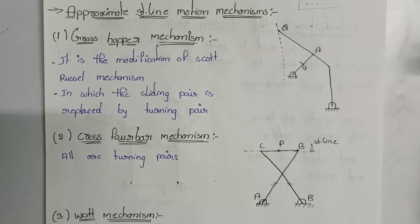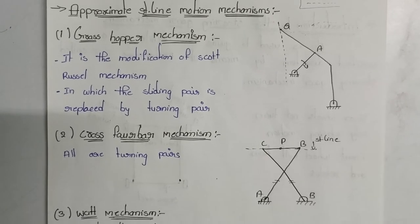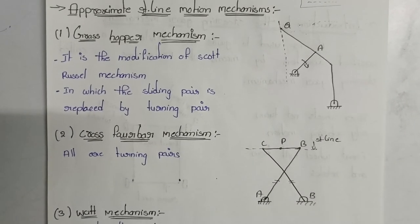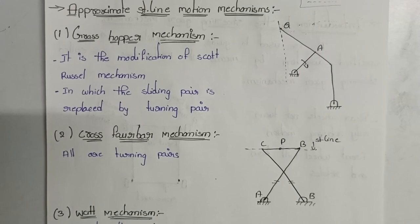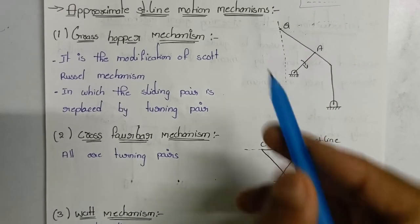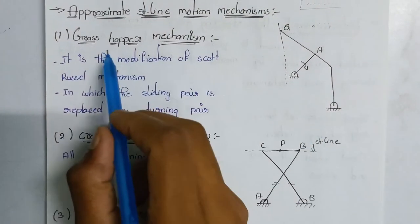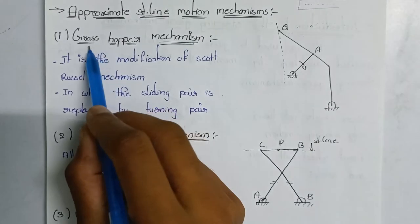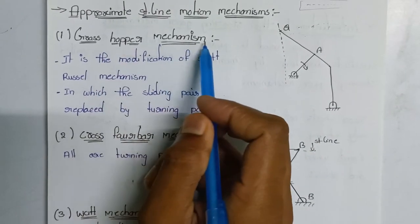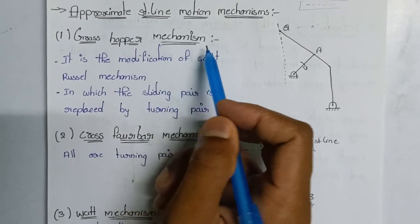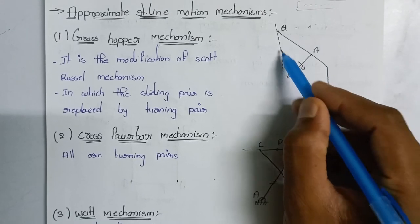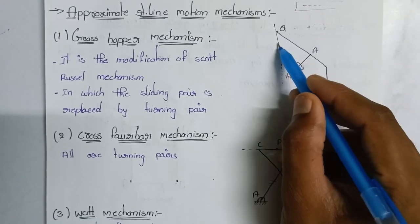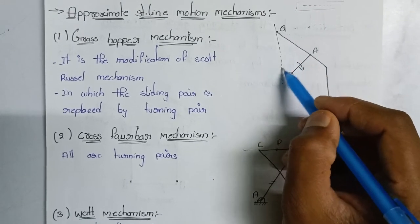You will find the description in the description. Please visit the Telegram and the channel. In this video, first we have a grasshopper motion mechanism. This is the exact straight line — there is a slight difference — approximately a straight line.